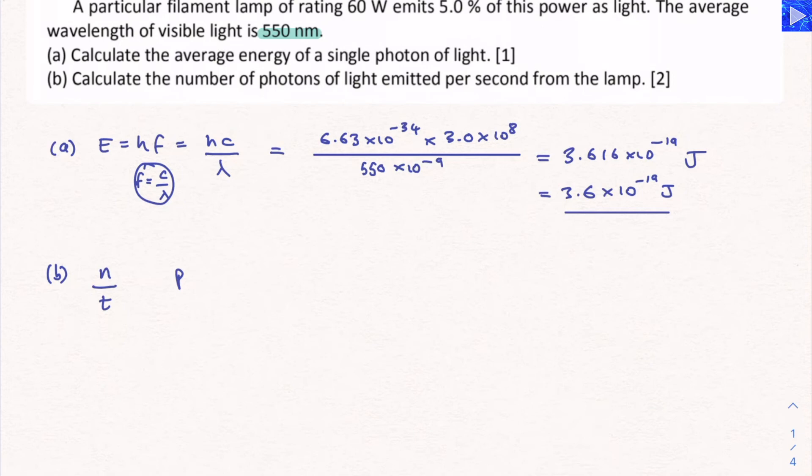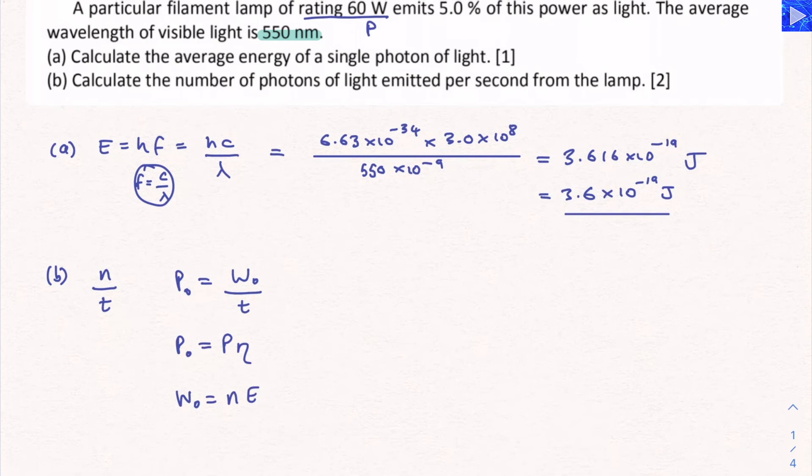The power output is going to be the total energy output divided by the amount of time that's outputted. The power output is equal to the total power of the filament lamp, which is the rating, multiplied by the efficiency eta. The efficiency was given to us, 5%. And the total energy output is equal to the number of photons you have multiplied by the photon energy. When we combine all of those, this is what we're going to get.